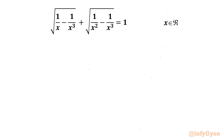Welcome back to InfiGyan friends. Today in this video we are going to take up one challenge from radical equations. The given equation is: square root of (1/x − 1/x³) plus square root of (1/x² − 1/x³) equals 1. We have to find out the real solutions.